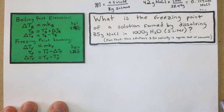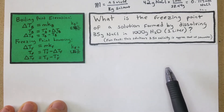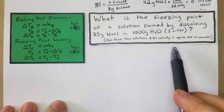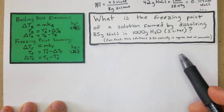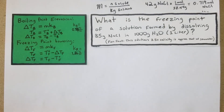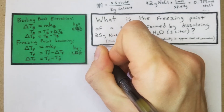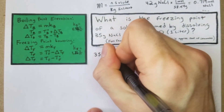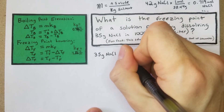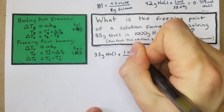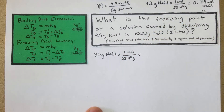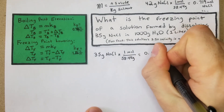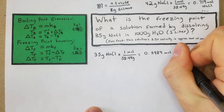Next problem: what is the freezing point of a solution formed by dissolving 35 grams of salt in 1000 grams of water — or one liter? This solution's salinity is about 3.5%, which is approximately seawater — a fun fact. We're essentially going to find the theoretical freezing point of seawater. We start with 35 grams of NaCl divided by 58.44 grams/mole to get moles: we get 0.5989 moles of NaCl.